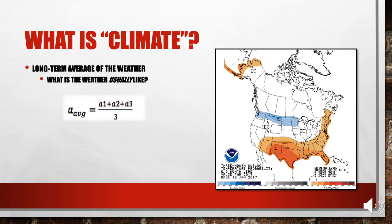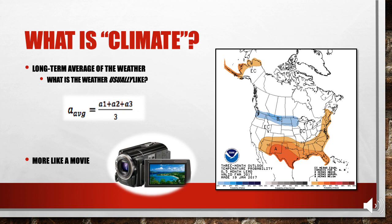Now that we know what weather is, what about climate? Climate is the long-term average of the weather conditions. It is an indicator of what the weather is usually like on a certain date or time of year. Remember that we compared weather to a single picture? Well, that makes climate more like a movie, comprised of a lot of individual pictures. A climate forecast, like this example of a three-month outlook from the Climate Prediction Center, only tells you what the average conditions are most likely to be over a period of time, and not what the day-to-day variation might be.